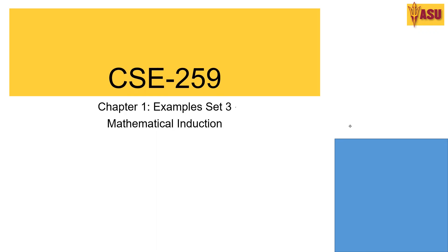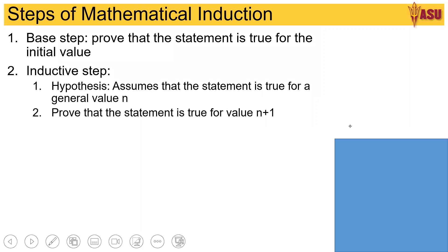A quick recap. Mathematical induction consists of three steps. The first is the base step, where you prove the statement is true for the initial value. The second is the hypothesis, where you make an assumption that it is true for a value of n. Then you prove that it is true for a value of n plus 1, given the hypothesis that it's true for n.